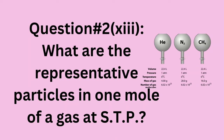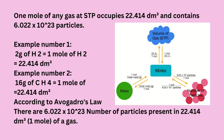Question number two, part thirteen: what are the representative particles in one mole of a gas at STP? One mole of any gas at STP occupies 22.414 cubic decimeters and contains 6.022 × 10²³ particles. Example 1: 2 grams of H₂ = 1 mole of H₂ = 22.414 dm³. Example 2: 16 grams of CH₄ = 1 mole = 22.414 dm³. According to Avogadro's law, there are 6.022 × 10²³ particles present in 22.414 dm³ — one mole of a gas.